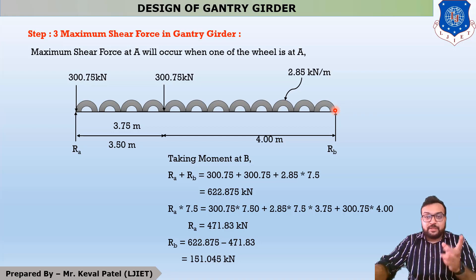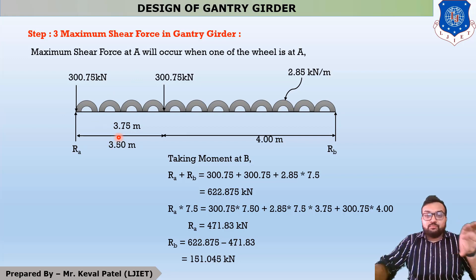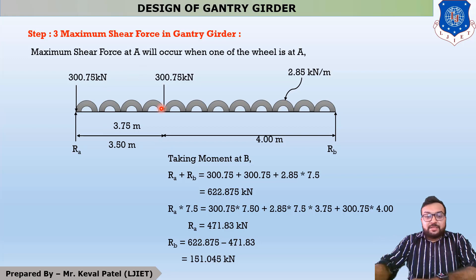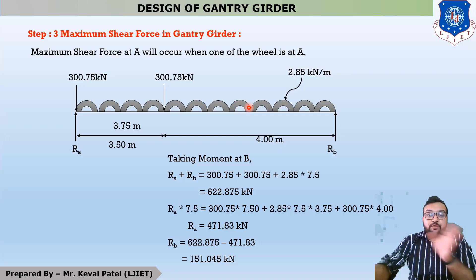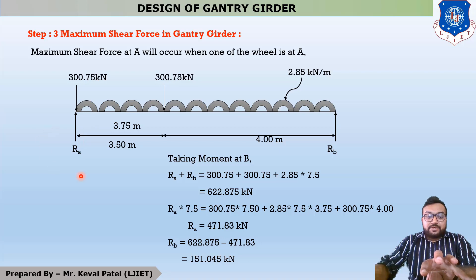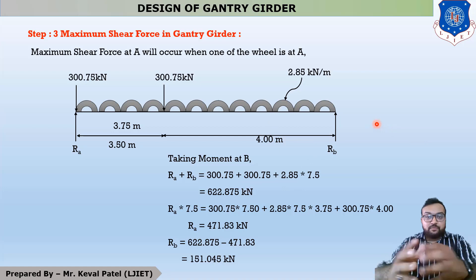This is the first possibility — the crane girder is supported on the left side. The second possibility is if the crane girder is moving to the right side, then this figure is transferred to the right: 300.75 kN at the right end, and the second wheel at 3.5 meters distance. You have to assume your crane girder is moving to any one side, either left or right. For the first figure, your reaction A is maximum and reaction B is minimum. We have to design any structural member for the maximum shear force and bending moment.